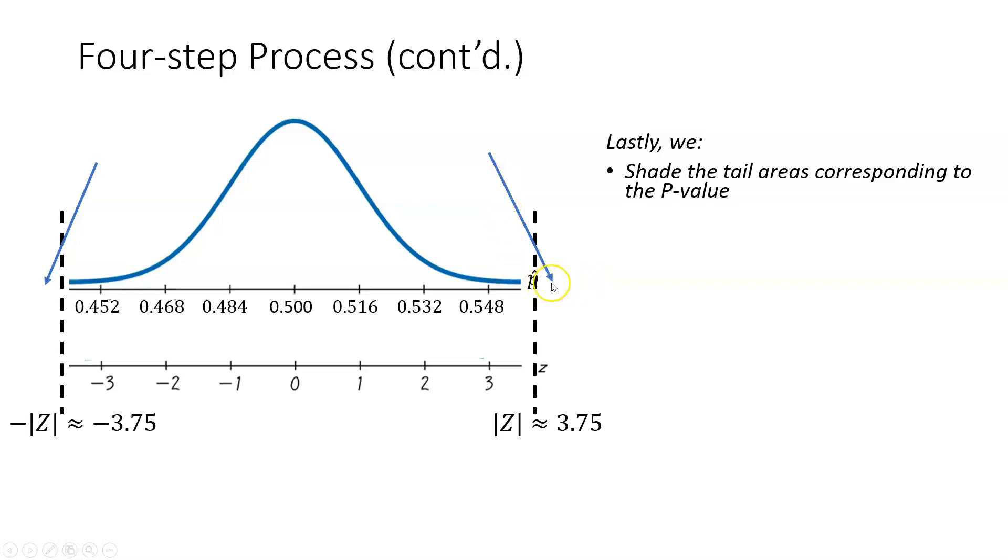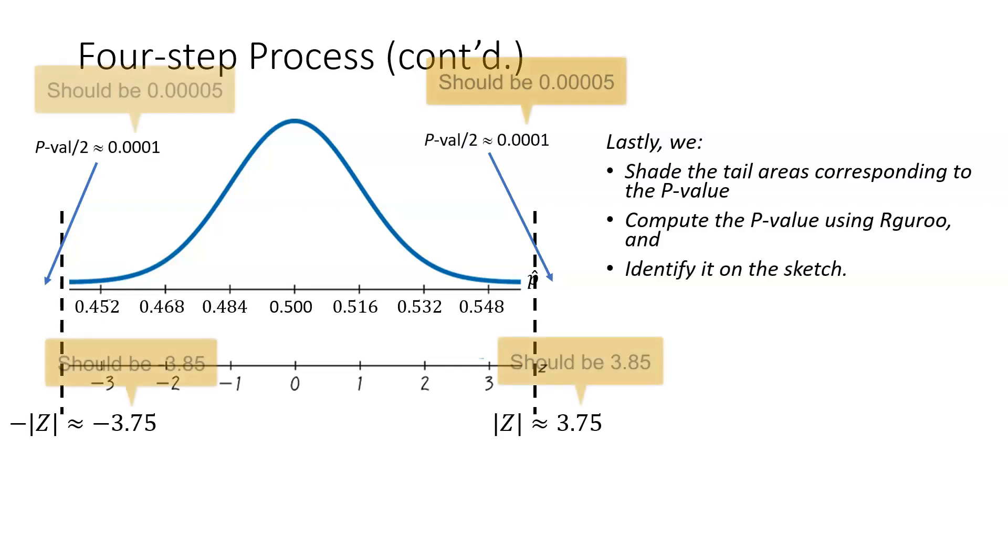Lastly, we're going to shade the tail areas corresponding to the P-value, which would be the tails to the right and left. In this case, the tails are off our diagram, so there's nothing to shade, but otherwise you would shade those. Then we would compute the P-value using R guru. I will show how to do that in just a moment, but I want to continue with finishing the sketch.